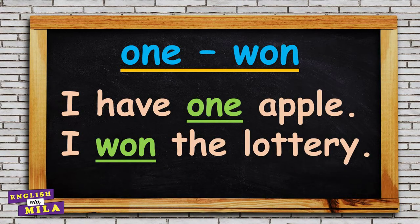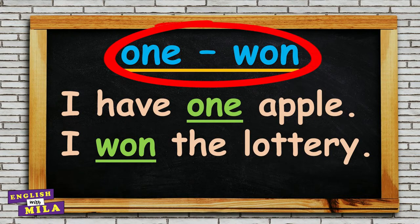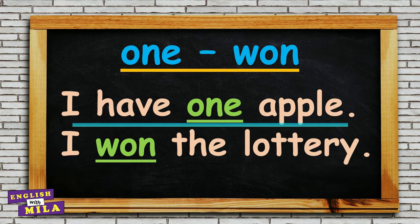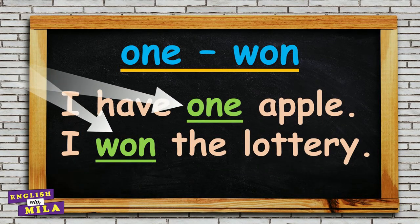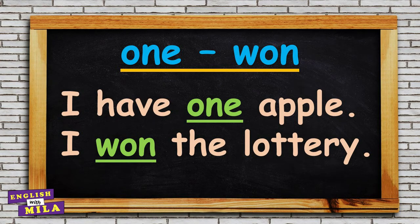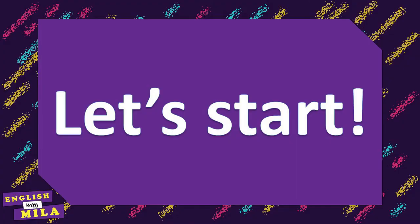For example: one, won. 'I have one apple.' 'I won the lottery.' These two words are homophones — words that you should memorize to eliminate confusion during conversations. Let's get started.